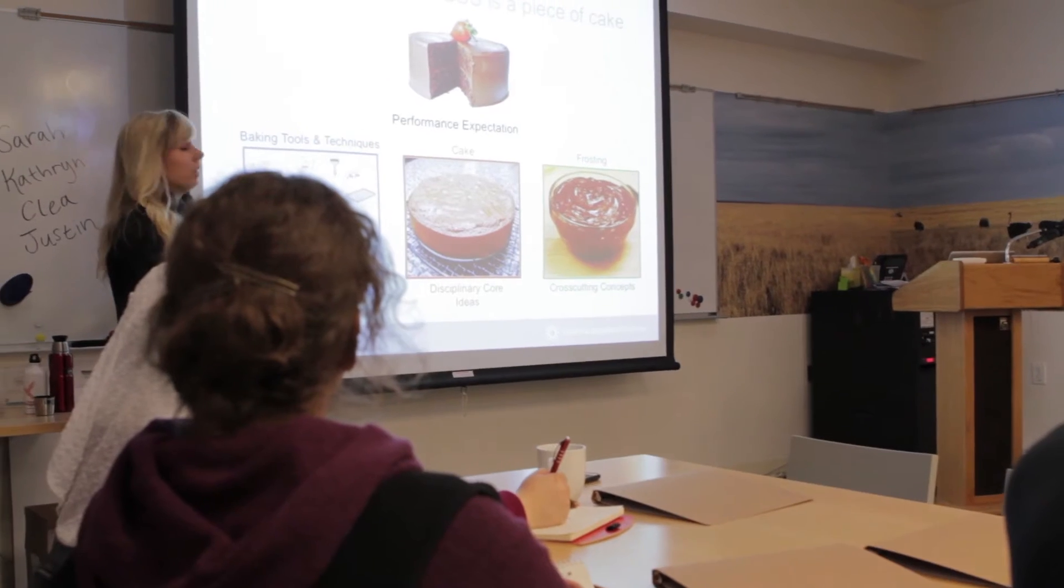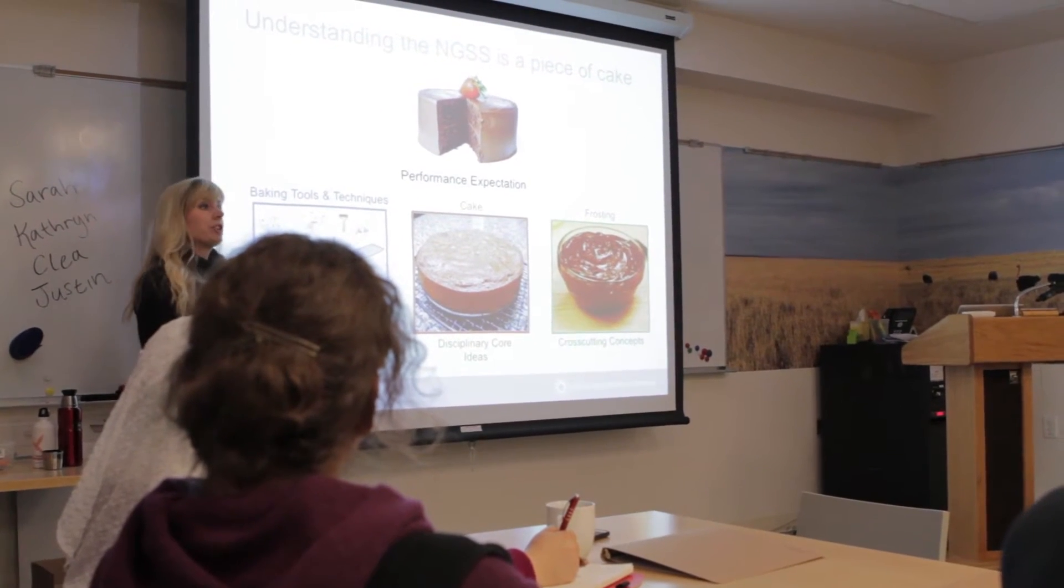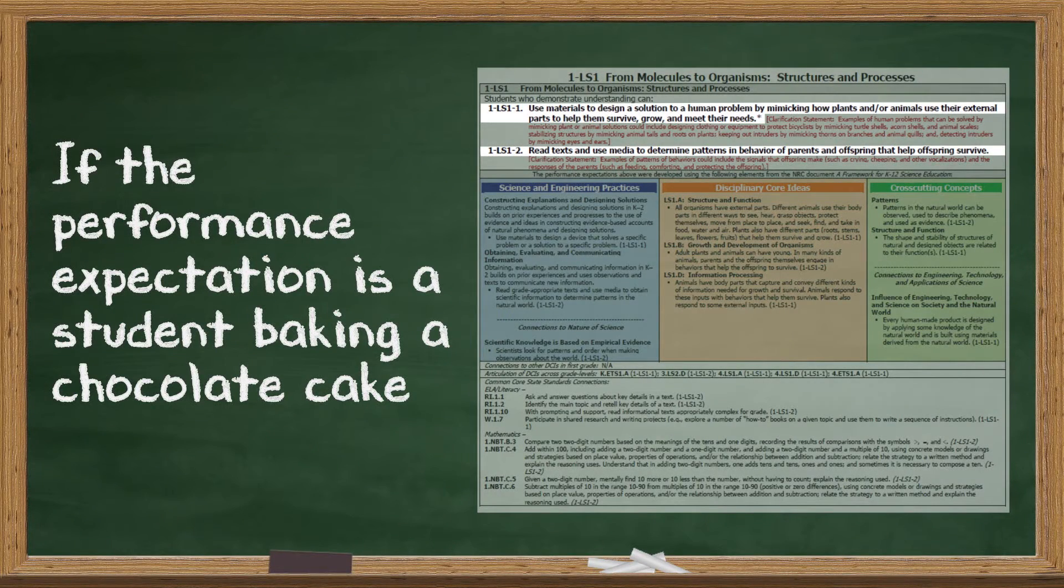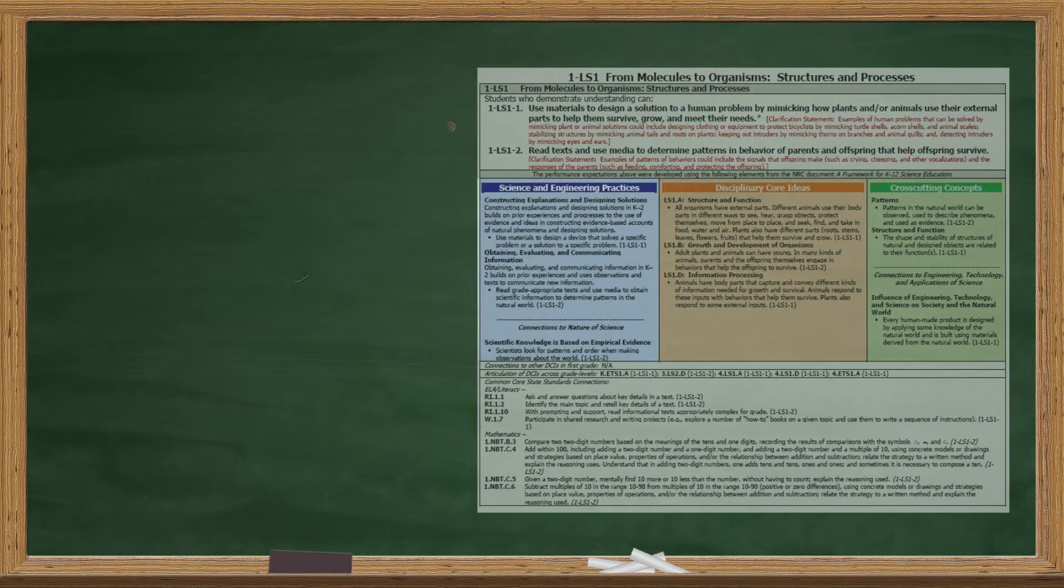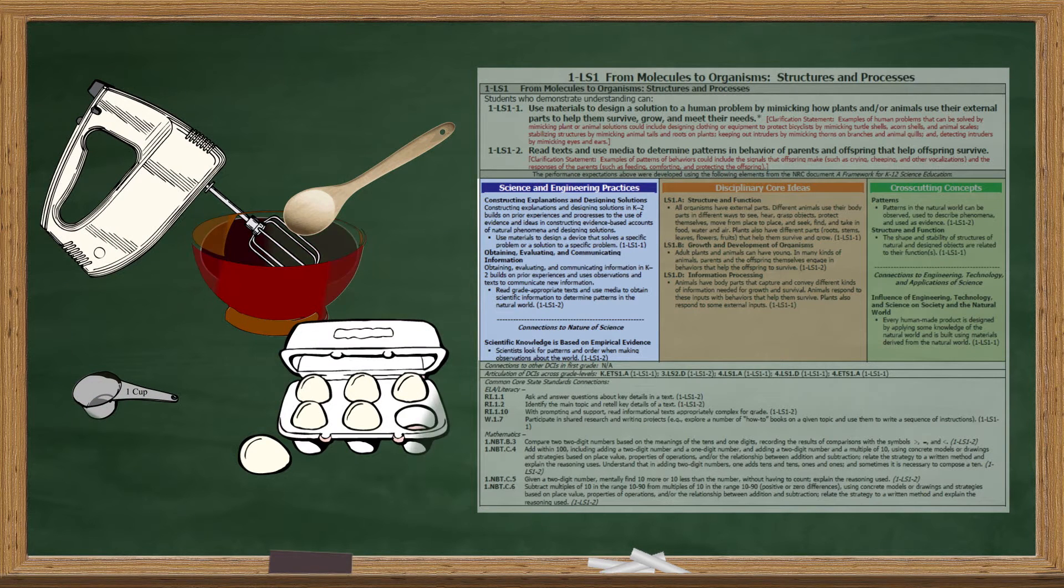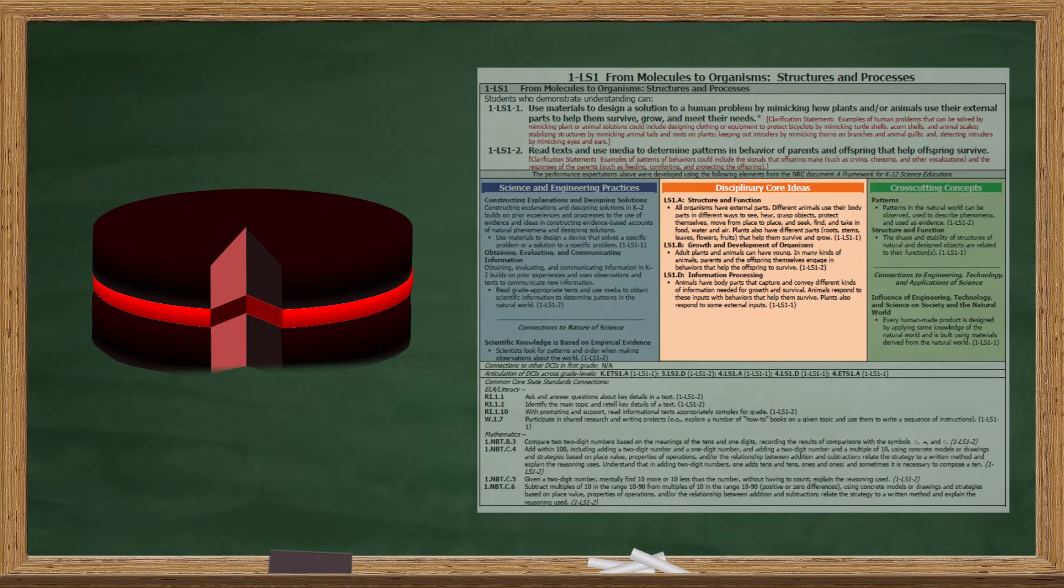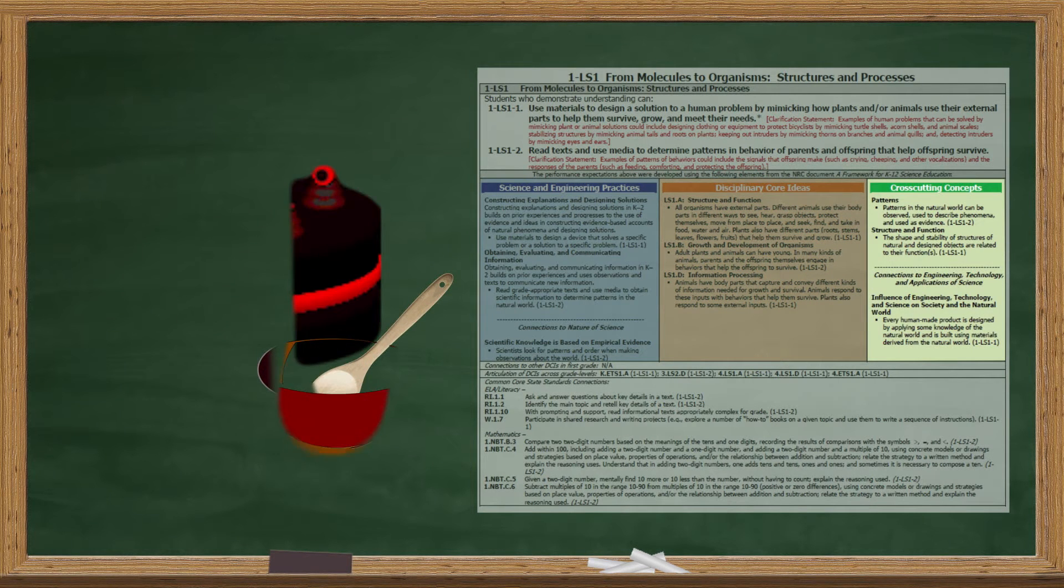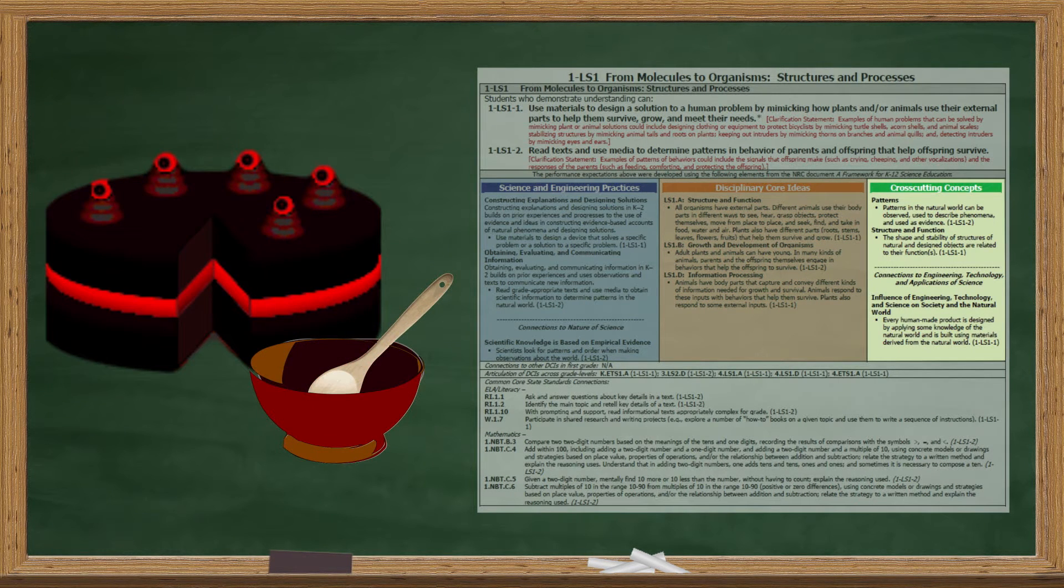In this analogy, we say that understanding the NGSS is a piece of cake. If the performance expectation is a student baking a chocolate cake, there are a number of skills and ideas that a student would need to have learned. For instance, the science and engineering practices represent the baking tools and techniques that a student would need. The disciplinary core ideas represent the chocolate cake itself, which is the so-called content of the dessert. And the cross-cutting concepts represent the frosting, because chocolate frosting is an important part of many different types of desserts, not just cake.